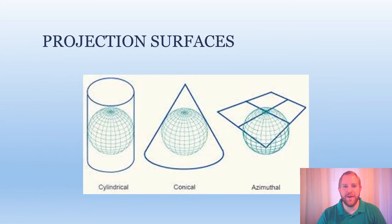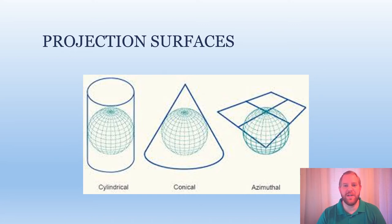Here are the three standard projection surfaces for making a flat map out of a spherical earth. The first is cylindrical, which is like rolling a sheet of paper around the globe. The second is conical, which is like projecting onto an ice cream cone. And the third is azimuthal, which is like balancing a sheet of paper on top of the earth.